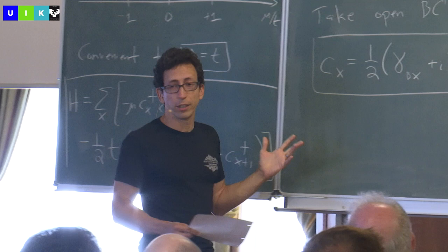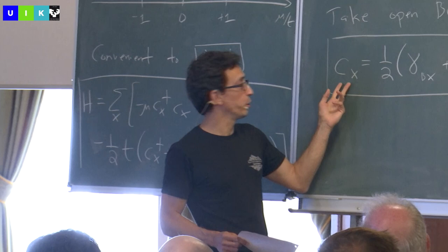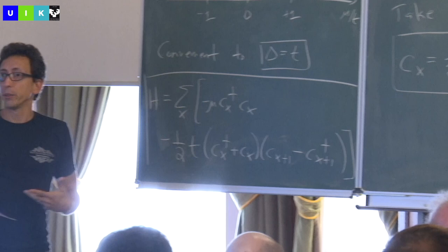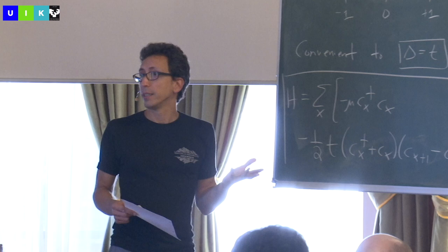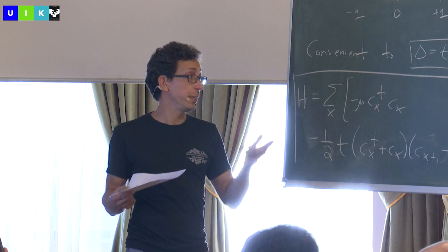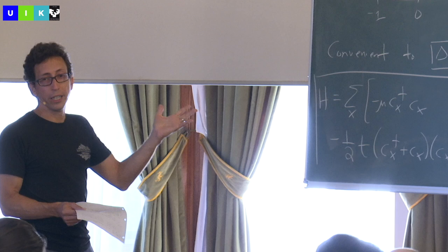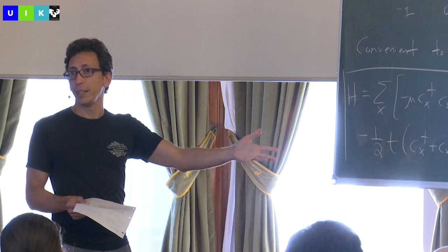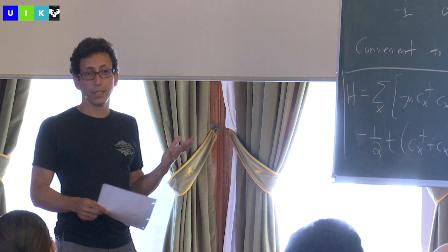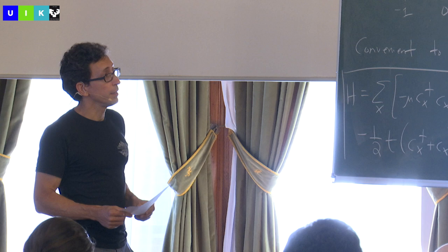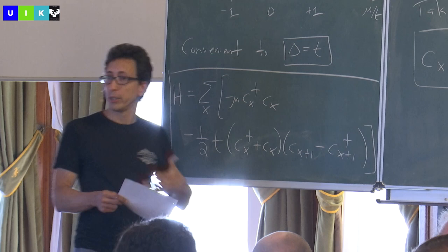This decomposition is loosely analogous to taking a complex number and expressing it in terms of real and imaginary parts: gamma-B is like the real part of Cx, gamma-A is like the imaginary part. You can also go the other way — if you take any pair of Majorana fermion operators, you can always take superpositions and define a canonical fermion with a zero or one occupation number. Of course, merely rewriting your operators this way doesn't necessarily imply that excitations and eigenstates of your system have a Majorana character. You need special situations in which eigenstates of a system are naturally described in terms of Majorana operators.